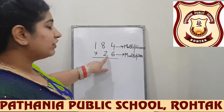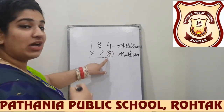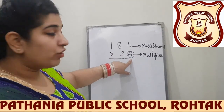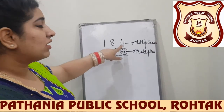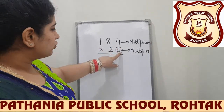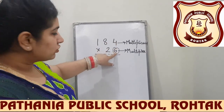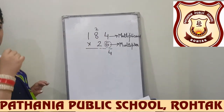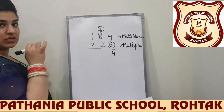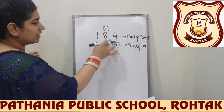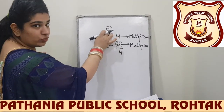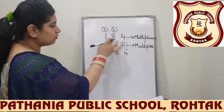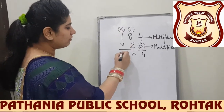Whenever we multiply, we start from the right-hand side of the multiplier. I will multiply 6 with all digits of the multiplicand starting from the right. So first, 6 × 4 = 24, so write 4 and carry 2 — put the carry in a circle. Now 6 × 8 = 48, plus 2 carry = 50, so write 0 and carry 5. Now 6 × 1 = 6, plus 5 carry = 11.